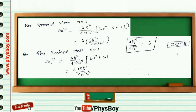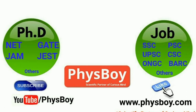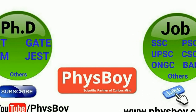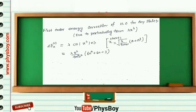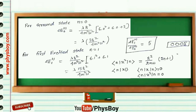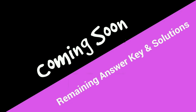Now I am going to share tips and tricks for upcoming and future examinations. If the perturbation term contains x to the power 4, you can calculate the first-order energy correction for any state — ground state, first excited state, second excited state, and so on — using this formula by just putting the value of n. If the perturbation term contains x-squared, you can similarly use another formula just by inserting n. If the perturbation term contains x, x-cubed, or any odd power of x, the first-order energy correction for any state will be zero.